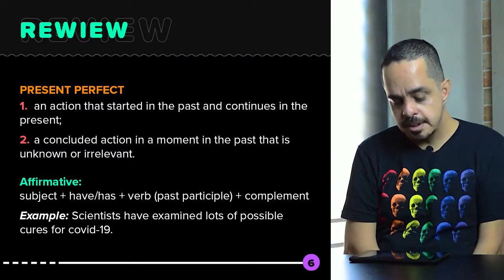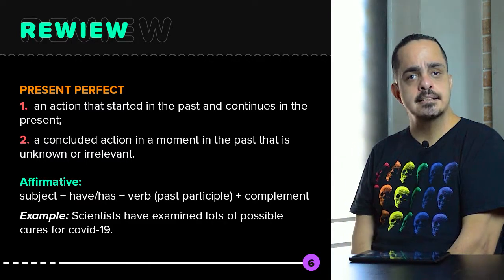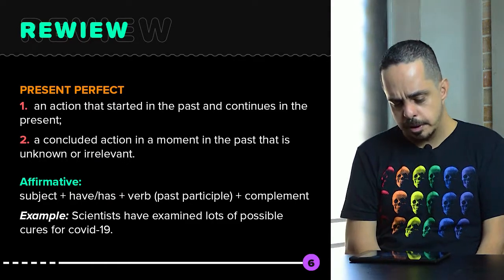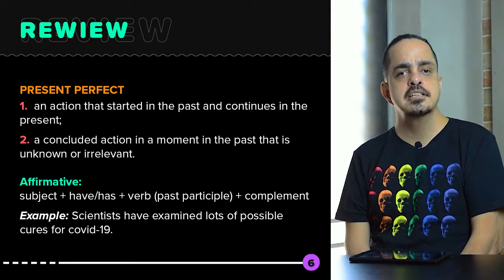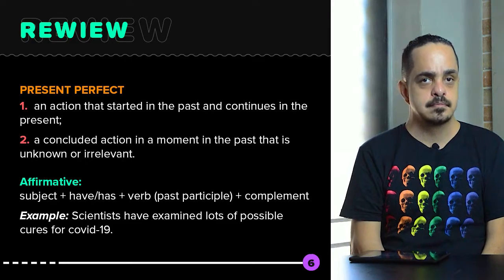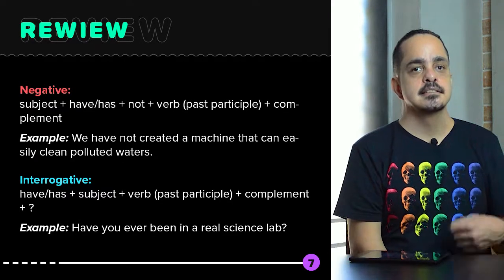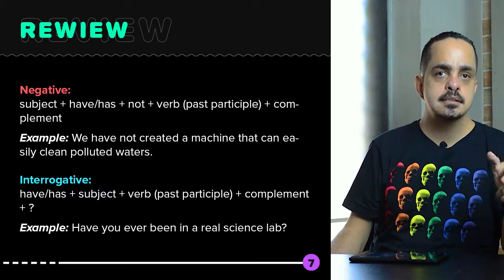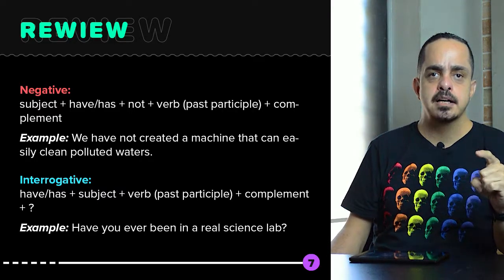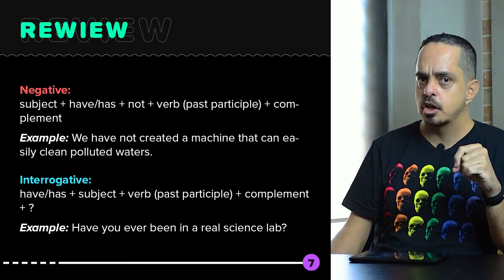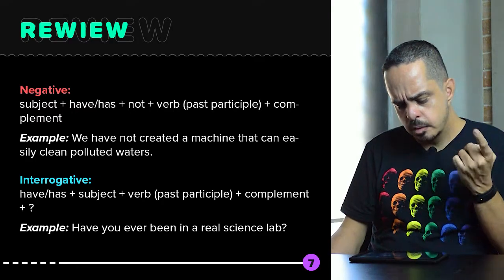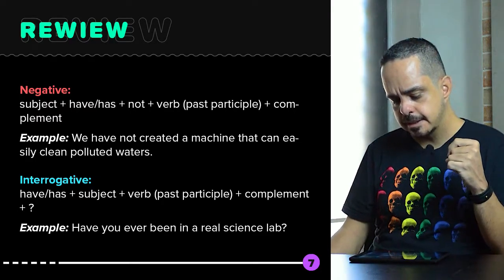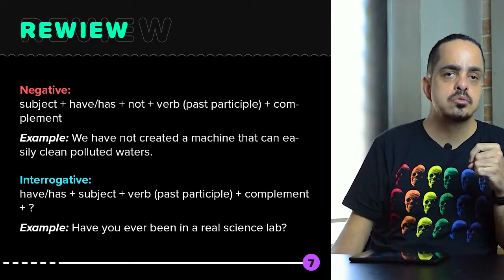For example: scientists have examined lots of possible cures for COVID-19. For negative sentences: subject, have or has plus not, main verb in past participle, and a complement. For example: we have not created a machine that can easily clean polluted waters.